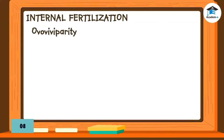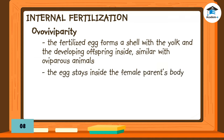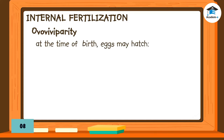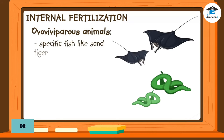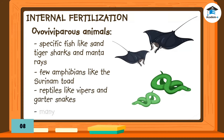In ovoviviparity, the fertilized egg forms a shell and yolk inside with the developing offspring, similar to oviparous animals, but the female parent keeps the egg inside her body. The offspring develop within the egg using the yolk as nourishment. At birth, the eggs may hatch along with their release, making it look like a live birth, or the egg may hatch before or after being released. Ovoviviparous animals include specific fish like sand tiger sharks and manta rays, a few amphibians like the Surinam toad, some reptiles like vipers and garter snakes, and many invertebrates.